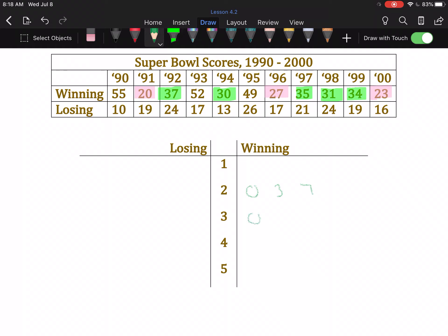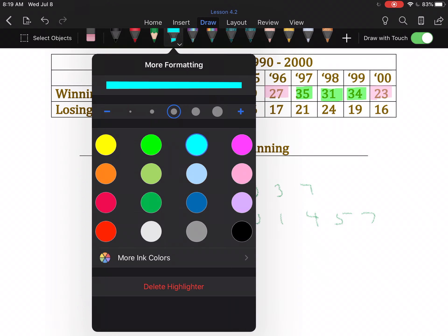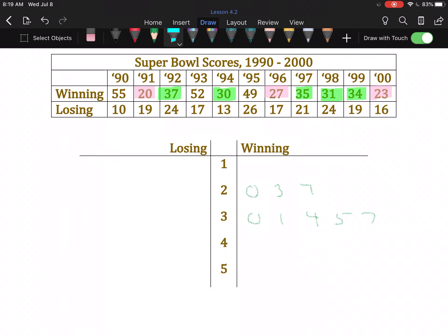So let's see. In order, that's going to be 30, 31, 34, 35, 37. For scores in the 40s, we have just the 49. So 4 gets a 9. And for 50s, there's a 52 and a 55. So a 2 and a 5.